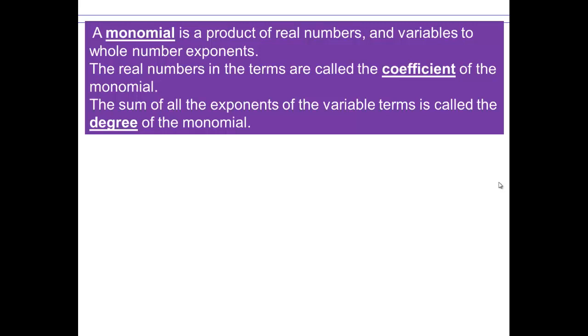So let's take a look at some definitions. A monomial is a product of real numbers and variables to whole number exponents. The real numbers are called the coefficient of the monomial. And the sum of all exponents in the variable terms is called the degree of the monomial.